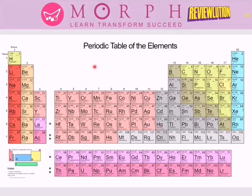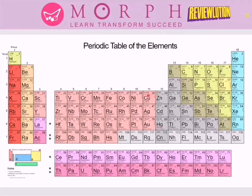This is our periodic table containing all the information about discovered elements. For example, copper is element 29. The moment you change the number of protons, the element changes. For instance, gold is 79 and mercury is 80 — add just one proton to gold and it becomes mercury. Changing electrons or neutrons does not change the element, but changing protons does.